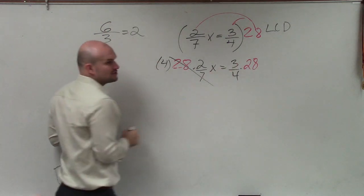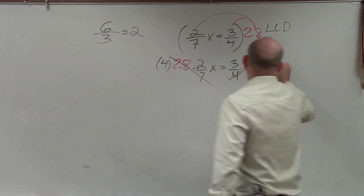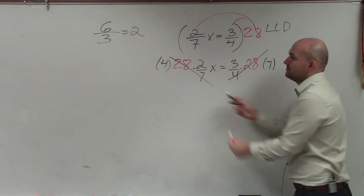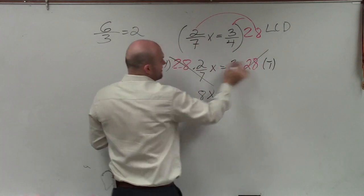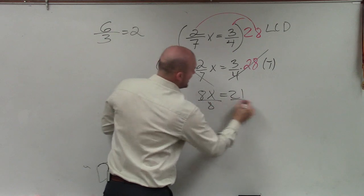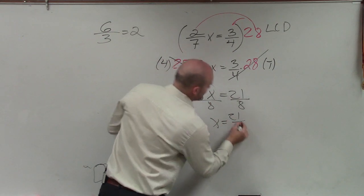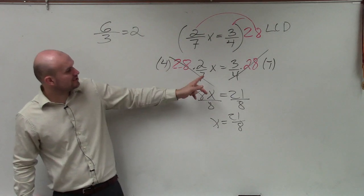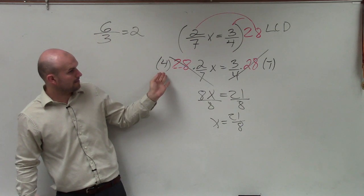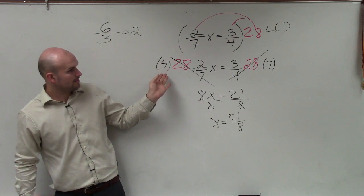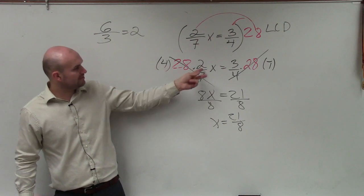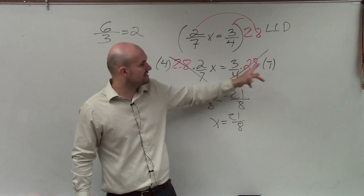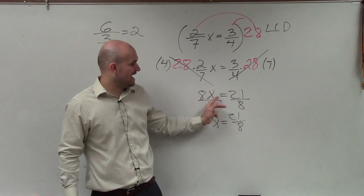How many times does 4 go into 28? Seven. So now I eliminated the fractions: 4 times 2 is 8x, and 7 times 3 is 21. So you're multiplying the LCD through and then multiplying across the top: 4 times 2 is 8, and 4 divides into 28 seven times, so 3 times 7 is 21. That gives us 8x equals 21.